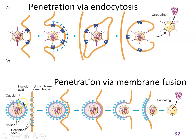If the virus uses membrane fusion, this makes use of the envelope — the lipid bilayer in enveloped viruses. The virion gets close to the cell membrane by attaching to molecules on it, and ultimately the membranes fuse — like two soap bubbles touching and becoming one. The envelope fuses with and stays in the cell membrane, while the capsid ends up in the cytoplasm and has to somehow release the nucleic acid.